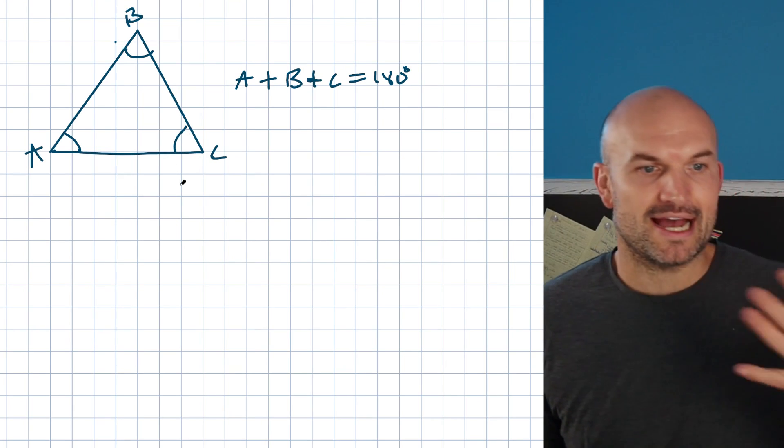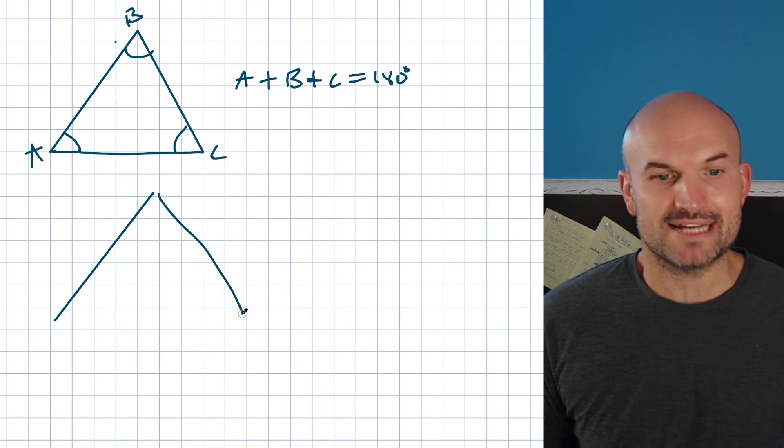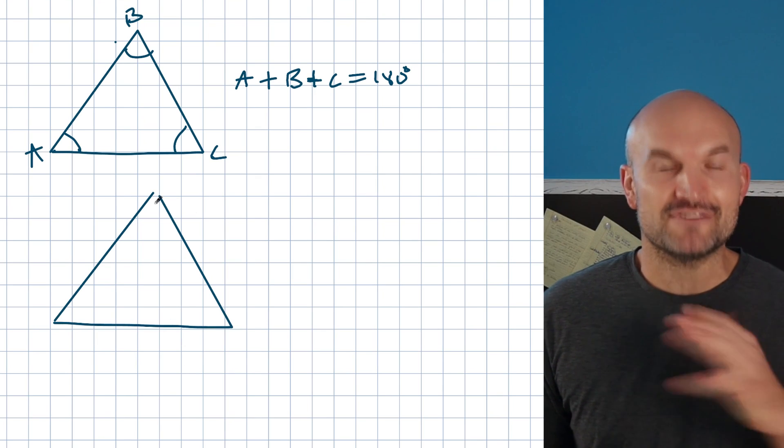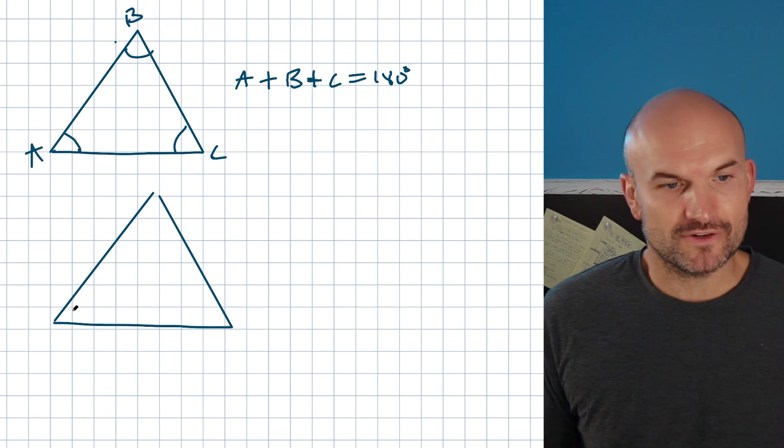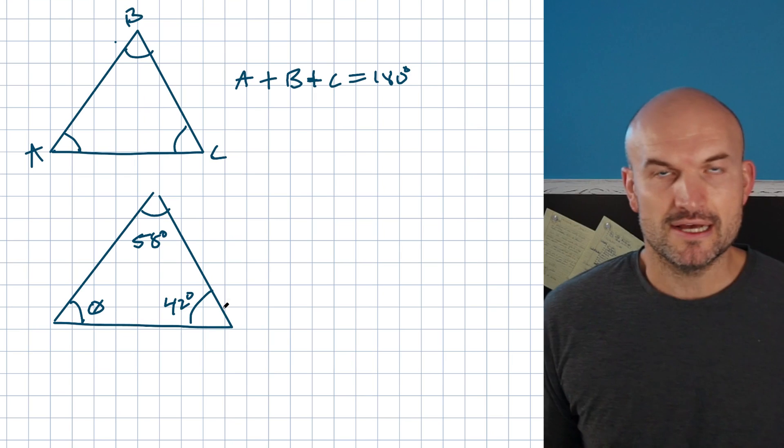If I wanted to solve a problem, let's say I had a given triangle, and let's say I had two angles inside that triangle, well, then using that information, I can now find my missing angle. For instance, let's say I had a theta, and then over here I had 58 degrees, and then over here I had 42 degrees.